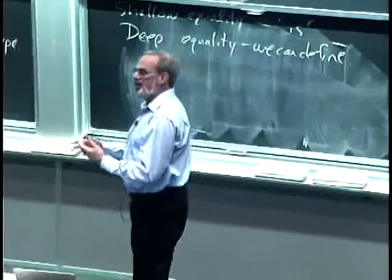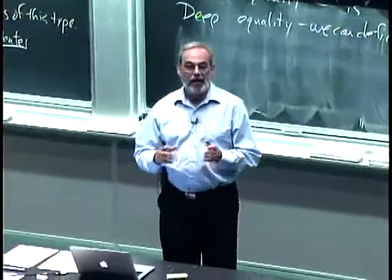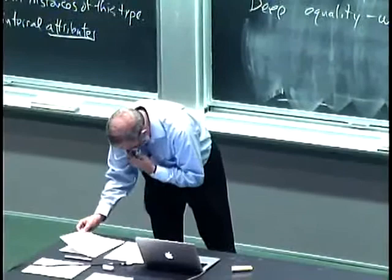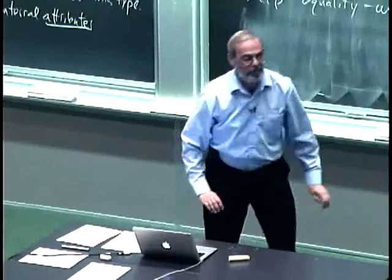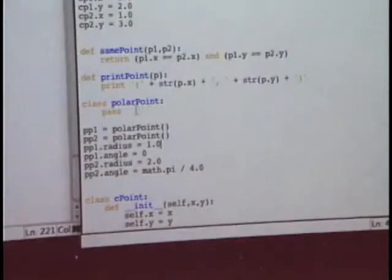We have one class definition — it's a cookie cutter, a template for building versions of these things. Every time I use it, I create a new instance — a different thing in memory. I want that because I want lots of versions of points. Similarly, I could build a PolarPoint class and create instances of it with a radius and an angle.